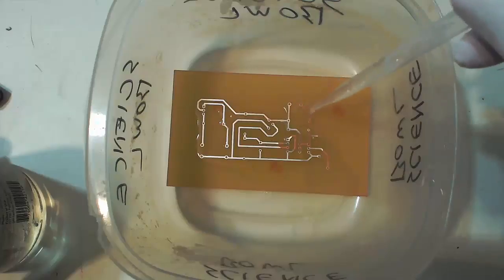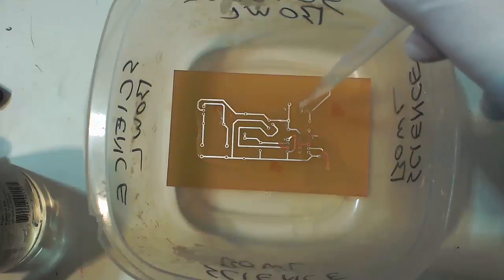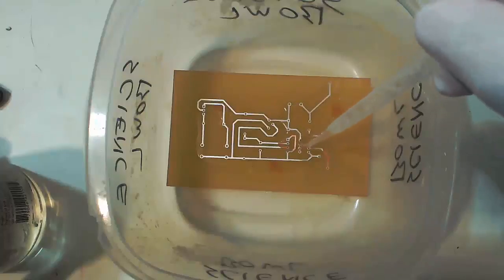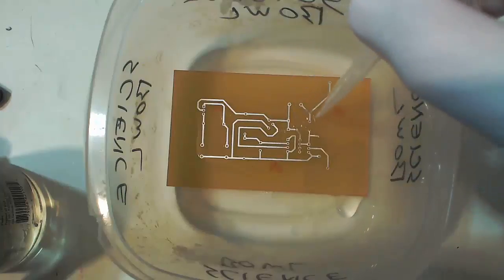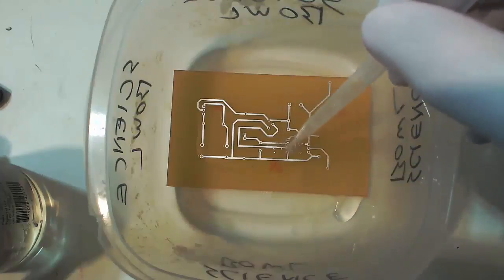The liquid tin does have thiourea, which is a carcinogen, so wear your gloves, don't breathe it in, be careful when you're using it. Note that I have a container labeled Science Bowl so that I don't use it for anything else. This is not stuff to mess around with.